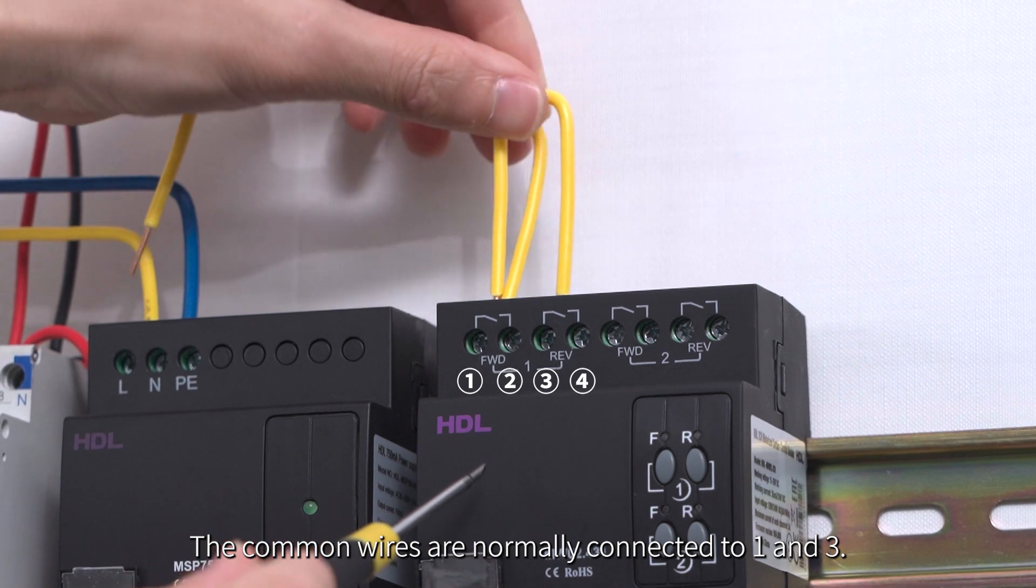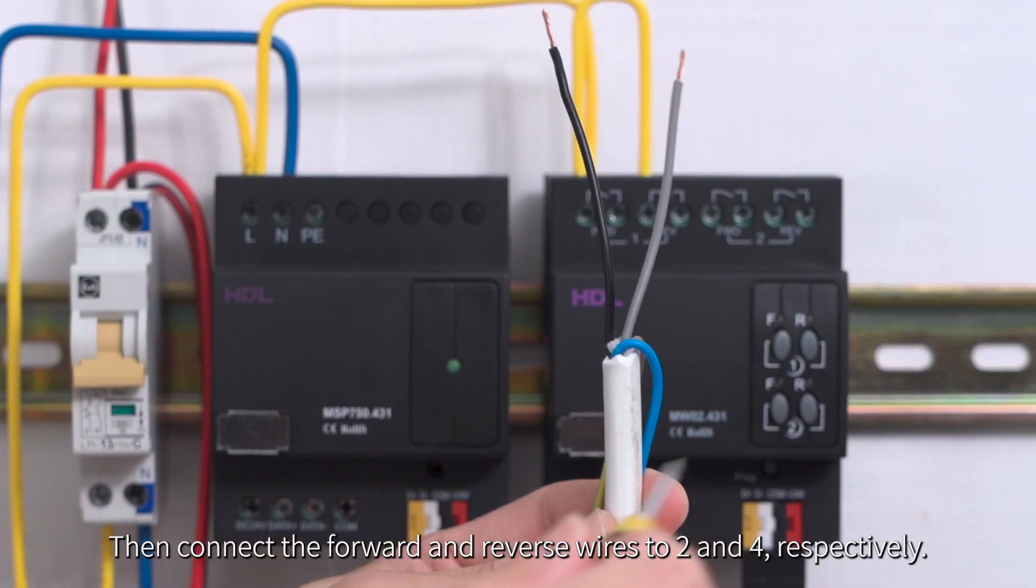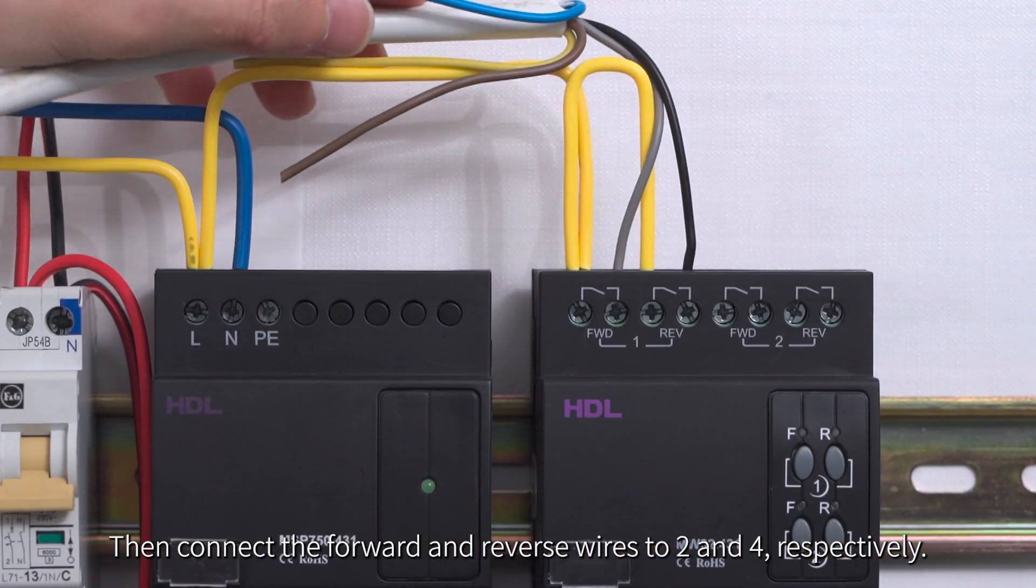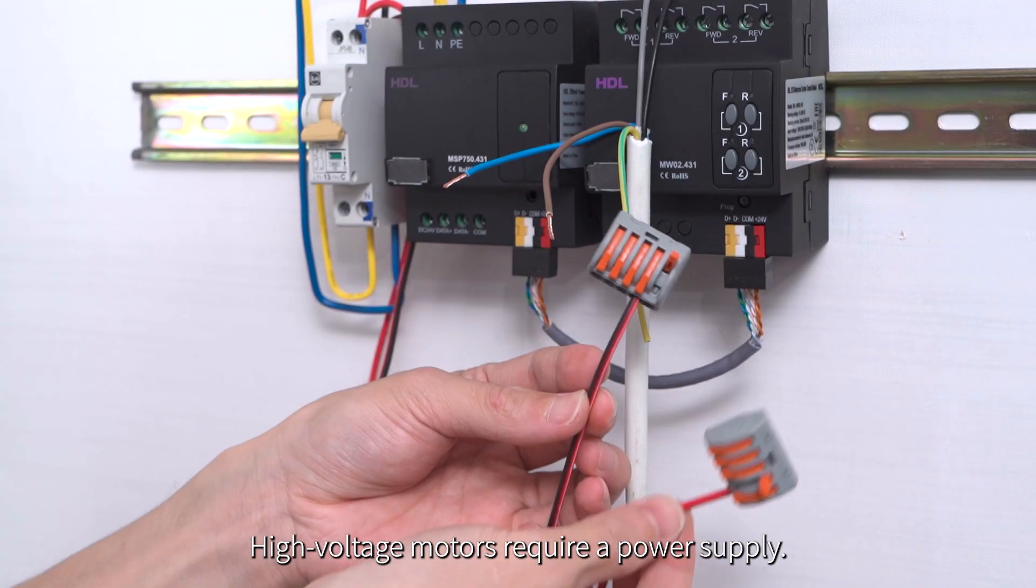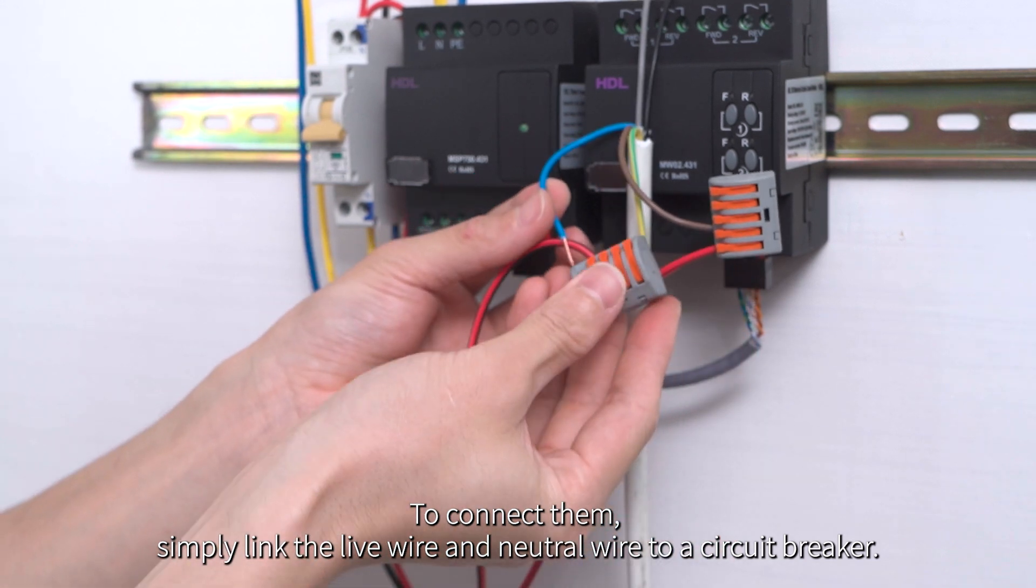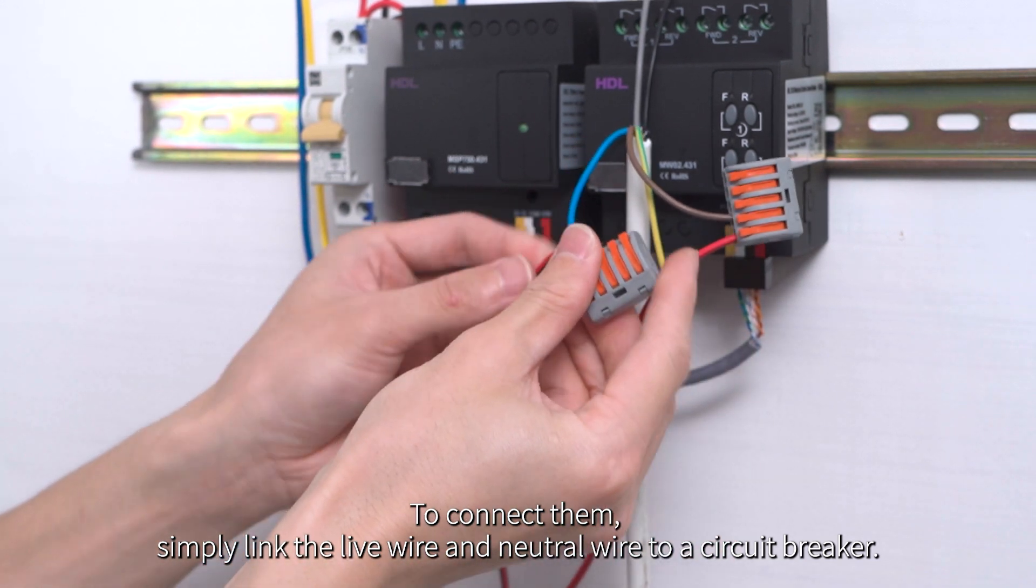The common wires are normally connected to 1 and 3. Then connect the forward and reverse wires to 2 and 4, respectively. High voltage motors require a power supply. To connect them, simply link the live wire and the neutral wire to a circuit breaker.